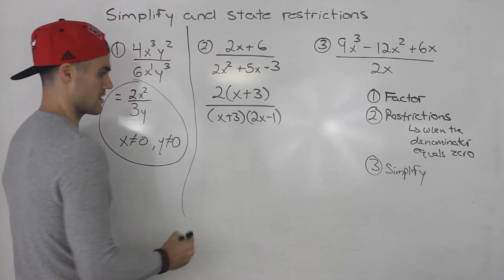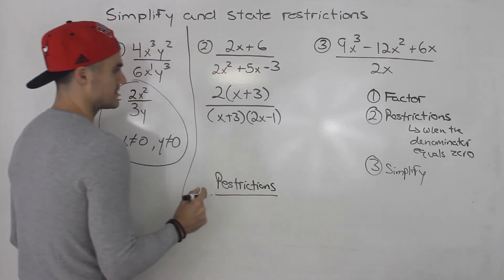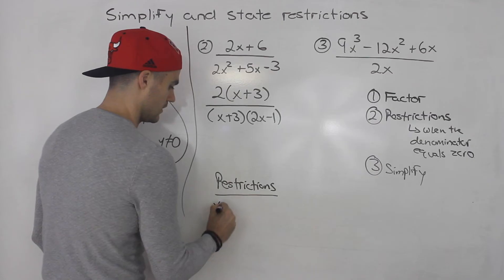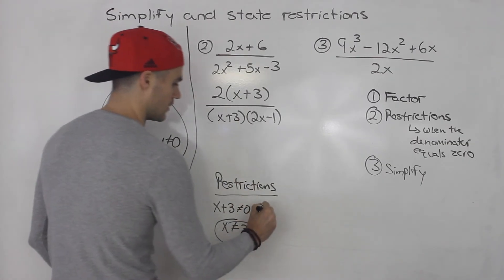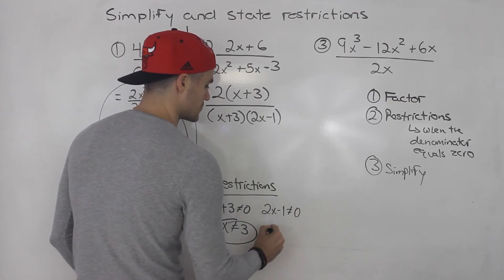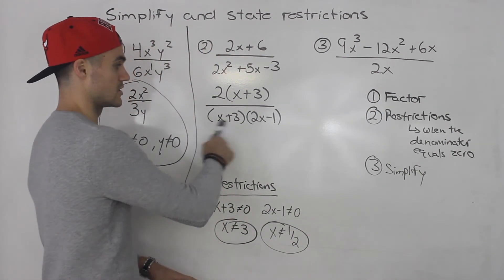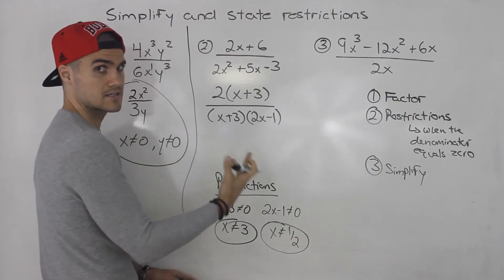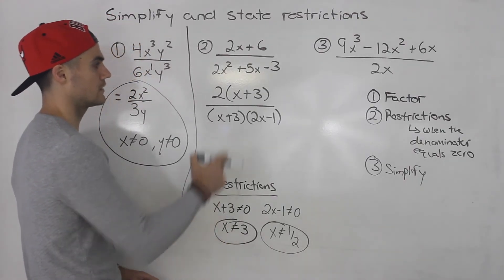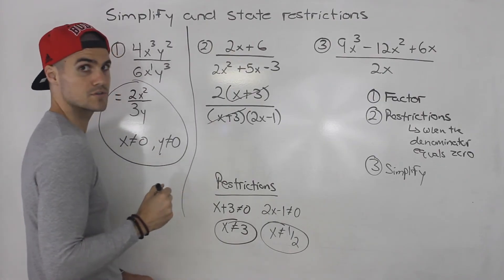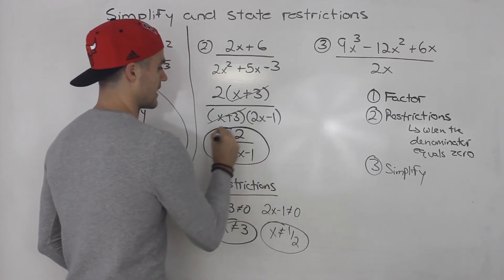Step two: state restrictions. The denominator cannot equal zero, so x plus three cannot equal zero — meaning x cannot equal negative three. Also, two x minus one cannot equal zero — meaning x cannot equal one-half. If x equals either of those values, the denominator is zero and the expression is undefined. Now we simplify: x plus three is common in both numerator and denominator, so those cancel out. We're left with two over two x minus one.